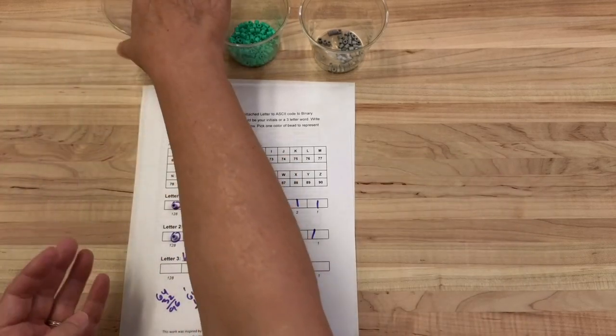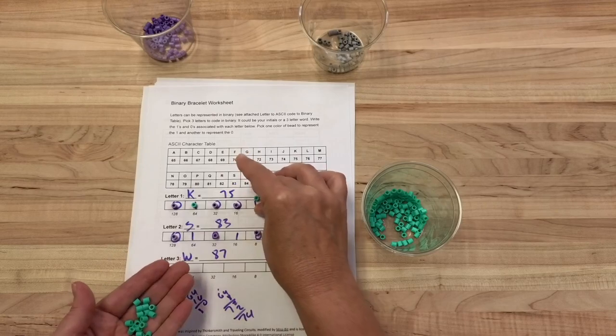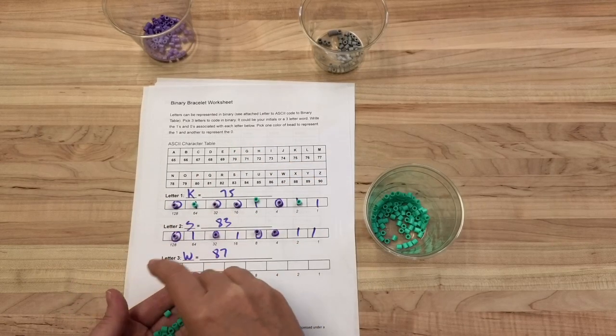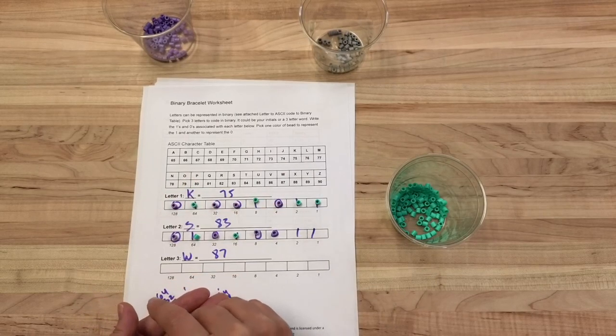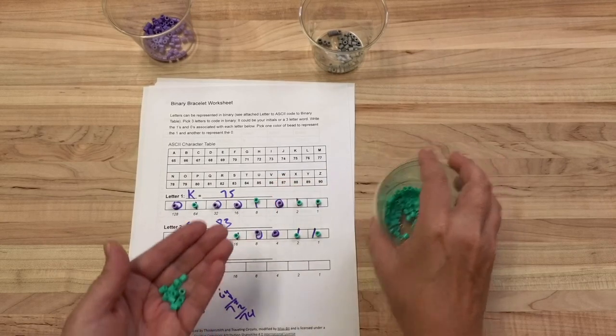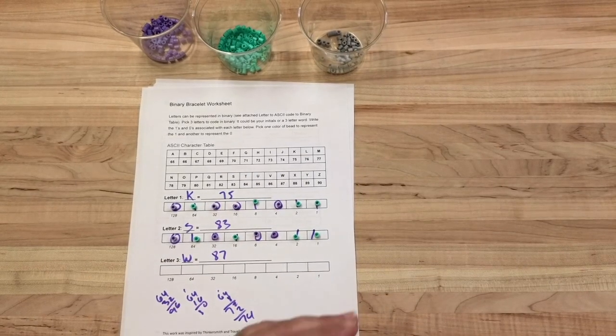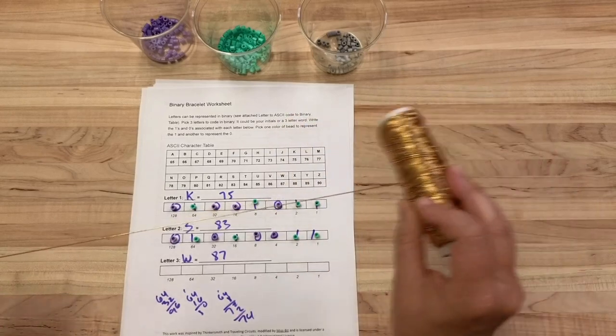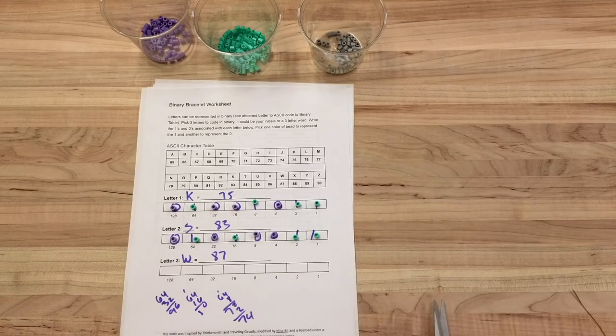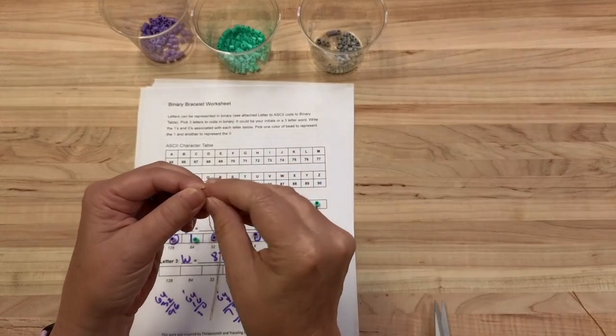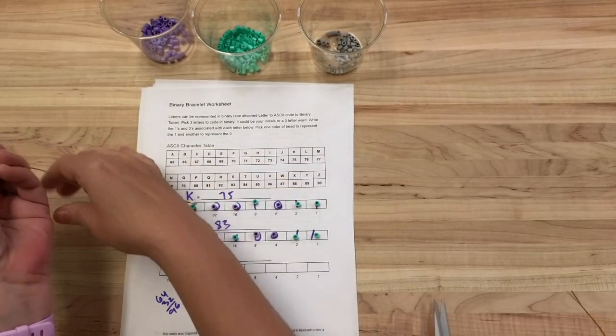And then I'm going to have green turquoise, this color, represent one. Okay. And then I can have a third color that I string in between, so it separates each of the codes. I'm going to need some elastic string, and I'm going to want to put a knot at the end of one part of it so when I string these they don't fall off.